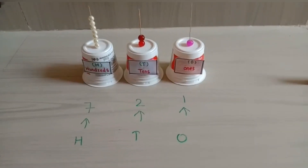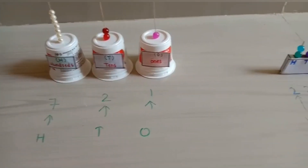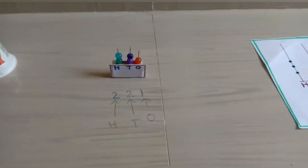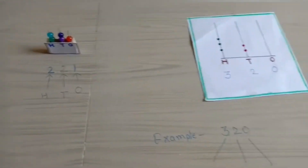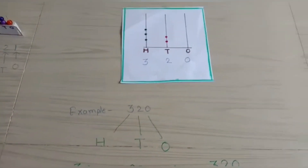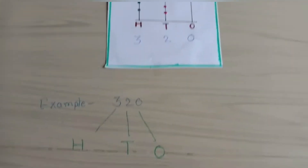Hope you have understood the concept of how to represent three digit numbers on an abacus. Thank you.